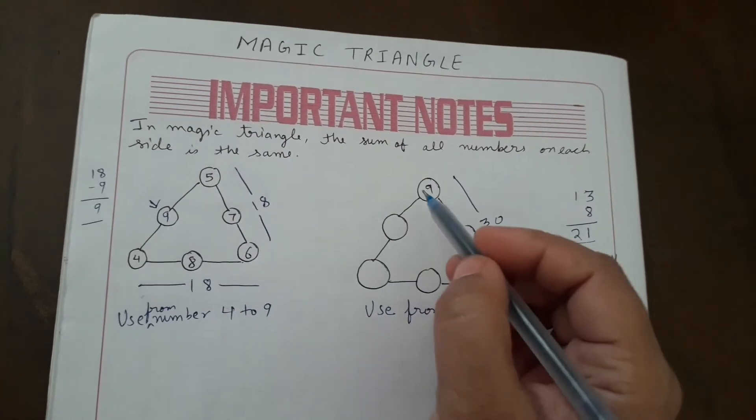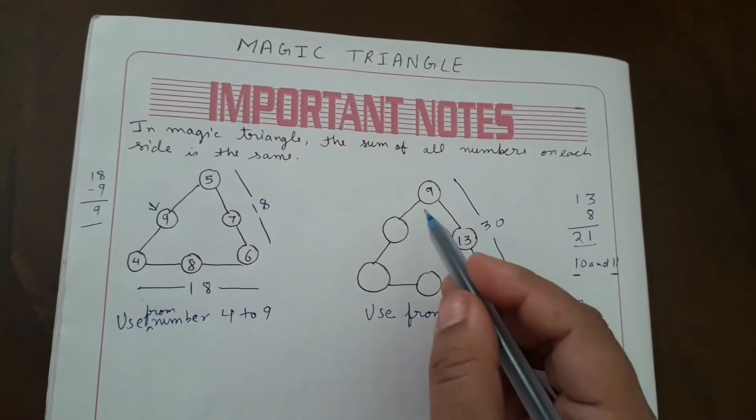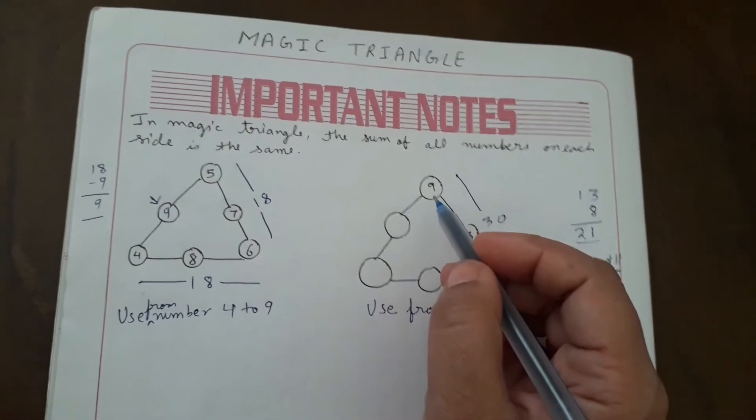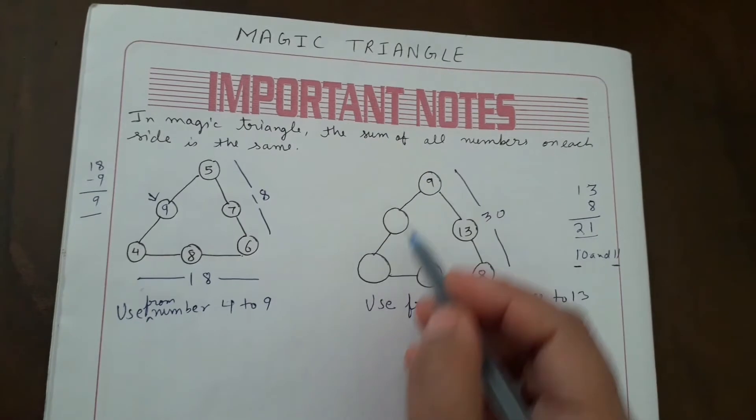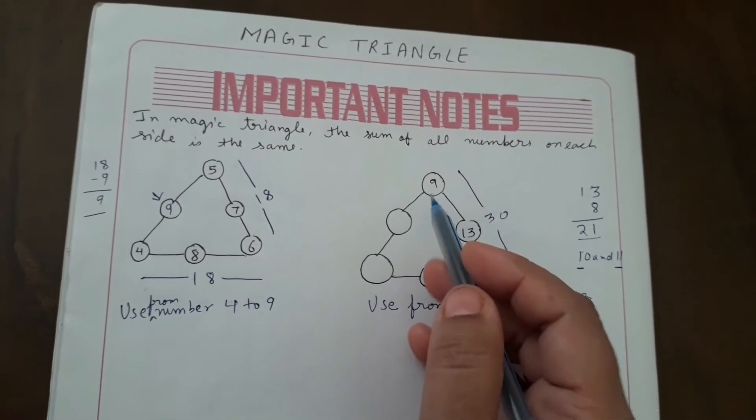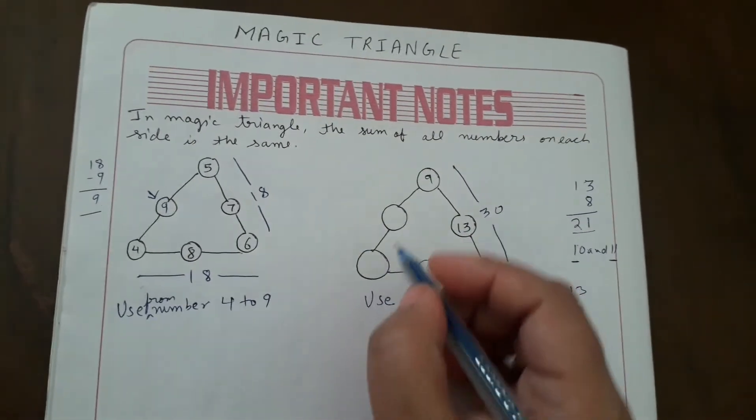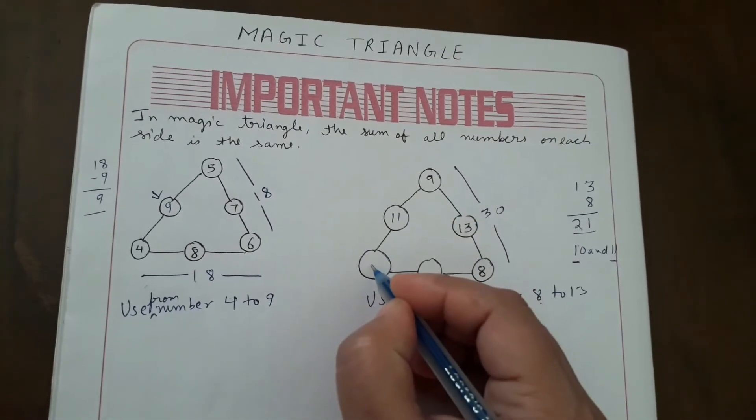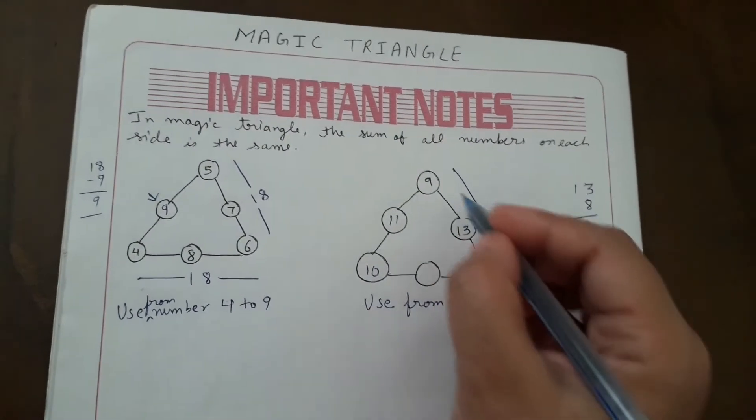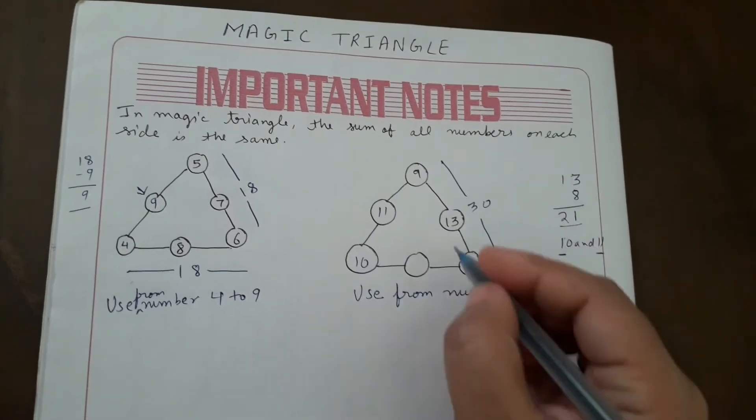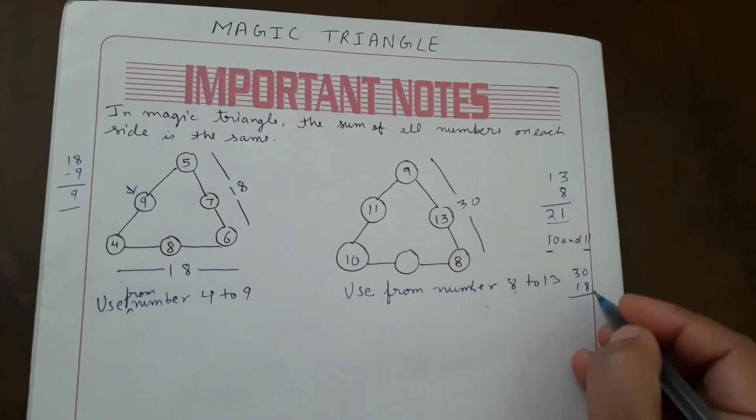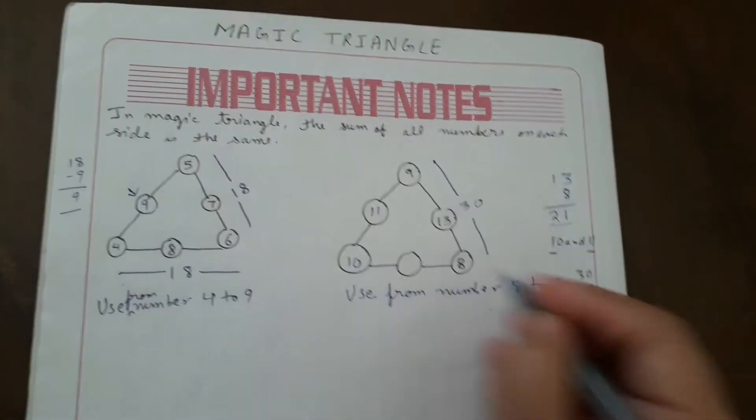21 and 9, 30 - because we have to make the sum 30 also. So 21 with 9 added gives 30, that's why 10 and 11 will come here. We will write 11 here and 10 here. Now 10 plus 8 is 18, and total is 30. We got this number by subtracting: 30 minus 18 is 12. We got this number 12.